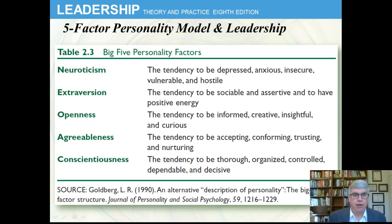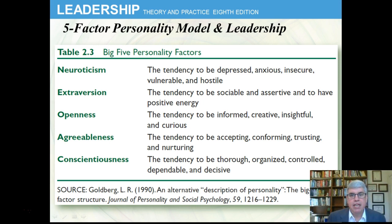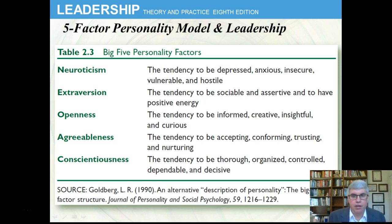The first of the five factors is neuroticism — the tendency to be depressed, anxious, insecure, vulnerable, or hostile. These things tend to go together, and what they have in common is negative emotion. Neuroticism can be viewed as the tendency to have negative emotions. A person can be high in neuroticism, having lots of negative emotions, or low in neuroticism, not having very many negative emotions.